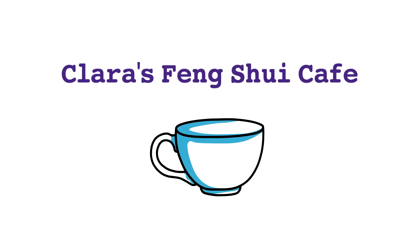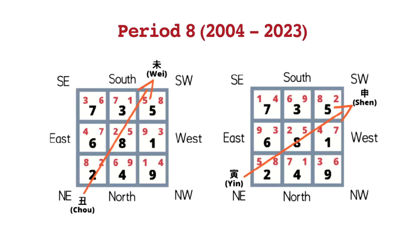Hi everyone, welcome to Clara's Feng Shui Cafe. In my last video, we learned two different examples of Period 8 house charts. Both are sitting northeast, facing southwest. However, when measuring more accurately with the luopan, one has good feng shui while the other one doesn't.